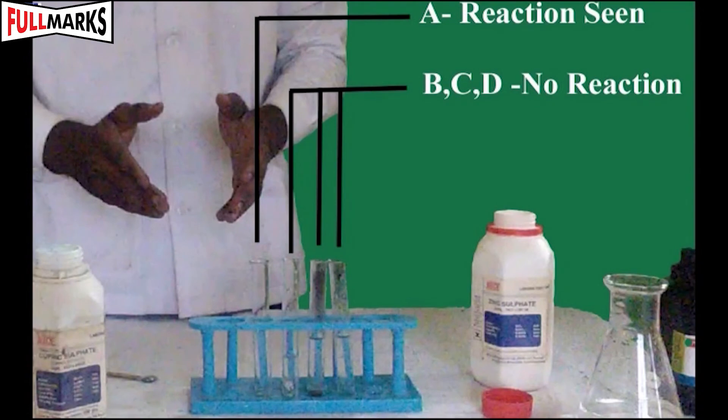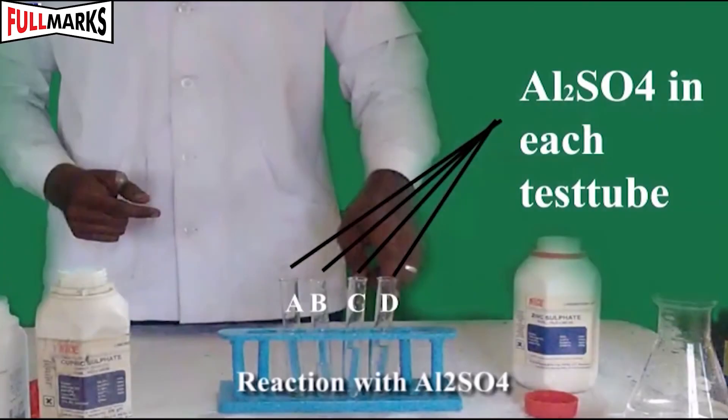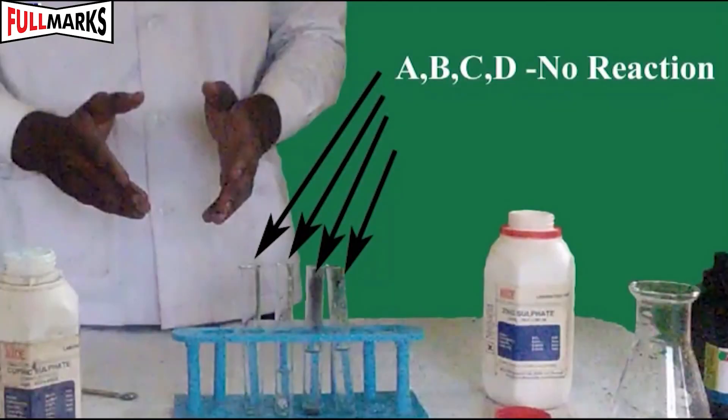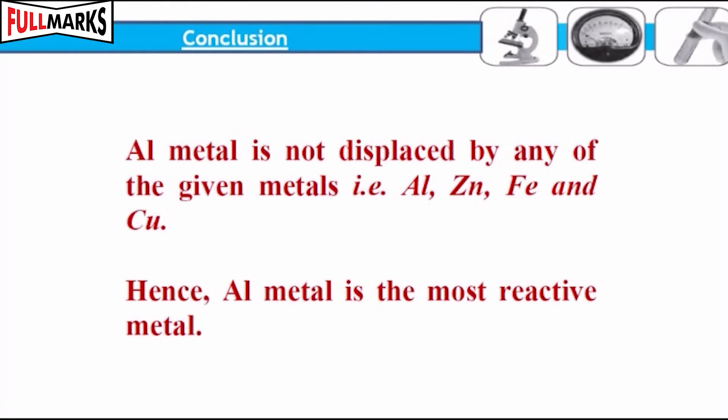Reaction with aluminium sulfate solution: Add aluminium sulfate solution in each test tube. Dip a small, clean piece of aluminium, zinc, iron, and copper metal in each test tube respectively. The observations are: all test tubes have no reactions happening in them.